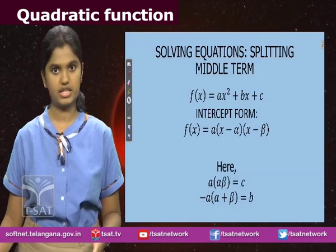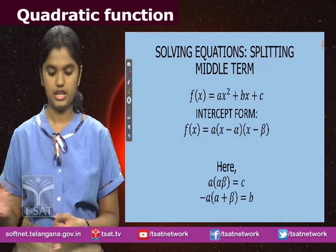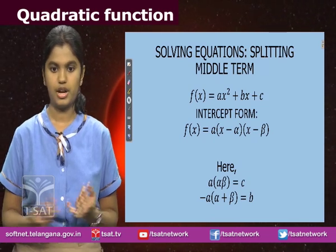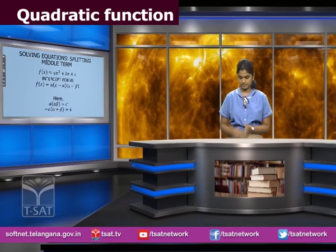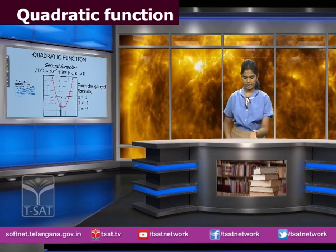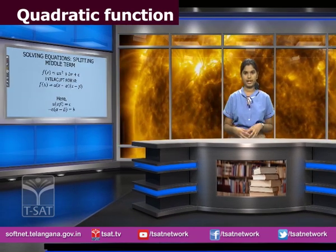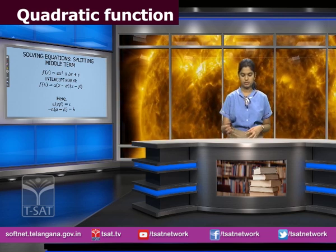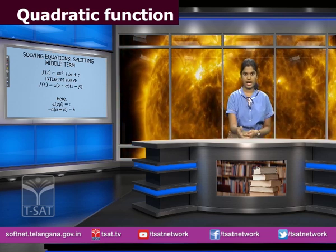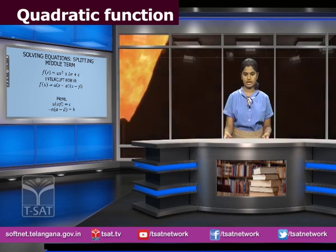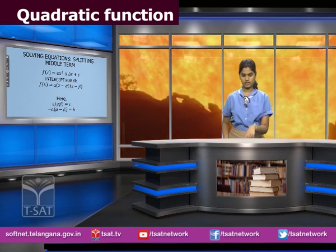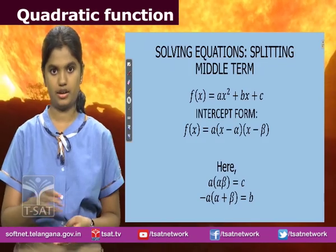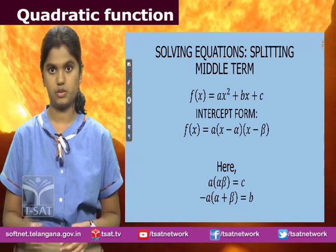There are different ways to show a quadratic function. The first is the intercept form, written as a(x − α)(x − β), where α and β are the x-intercepts — shown here as minus 1 and 2. To obtain this form, we have to split the middle term such that b is always the sum of the different factors of a and c. It's also given that a·α·β is equal to c, which is the y-intercept.